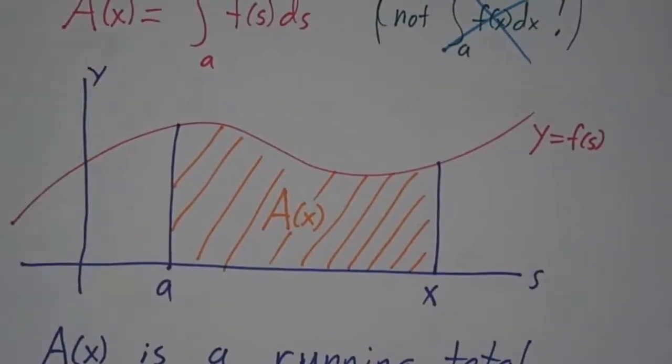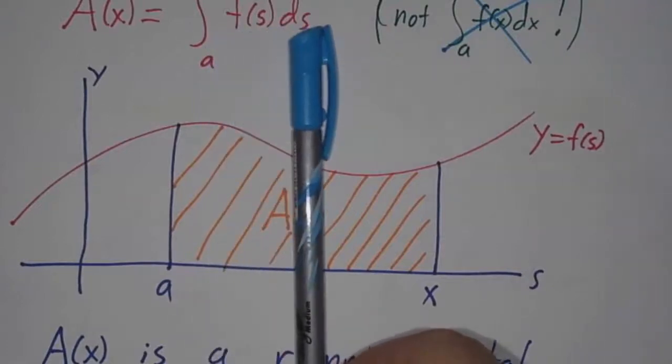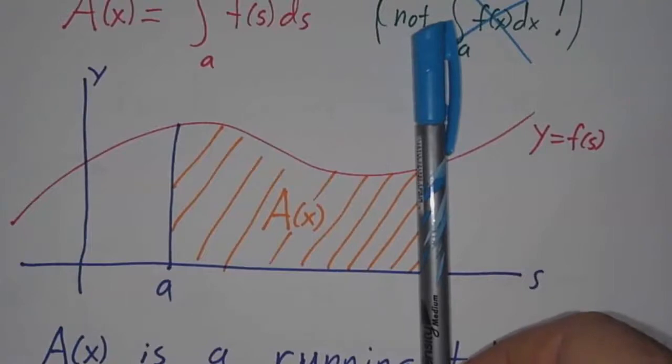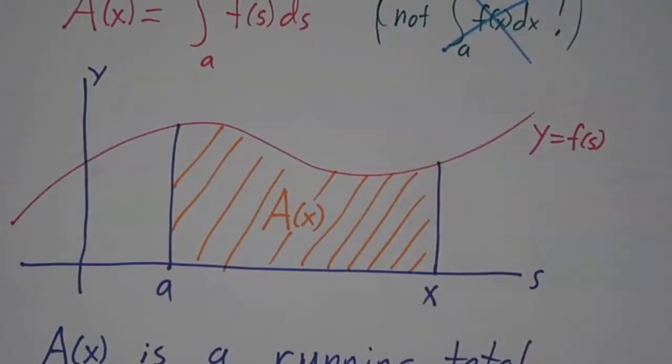And our picture is, here we've got the curve y = f(s), and A(x) is a running total, it's all the area starting at a, all the way up to x. So A(1) is all the area up to here, A(2) is all the area up to here, A(3) is all the area up to here, A(4) is all the area up to here, A(5) is all the area up to here. It's a running total.